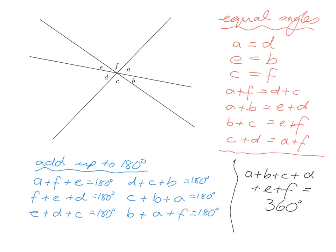If you're a bit clever, you'll also notice combined angle pairs: angle a plus f is vertically opposite angle d plus c; angle a plus b is vertically opposite angle e plus d; and b plus c is vertically opposite e plus f. You can continue going around, but note that c plus d is vertically opposite a plus f, which we already covered, so we can stop there.